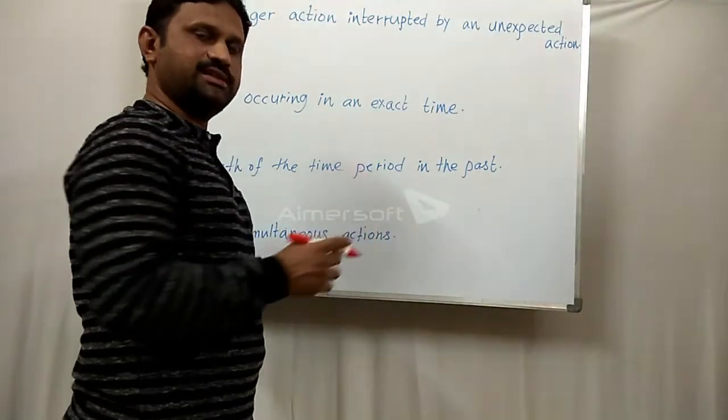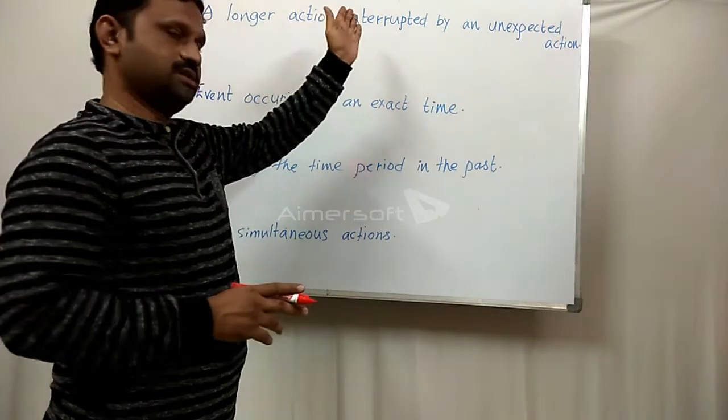Generally, we use past continuous tense negative form to deny actions which were in progress in the past. Past continuous tense negative forms are used in different cases. For instance: a longer action was in progress at the time a short action interrupts it, and also when the exact time of action and situations are carrying on simultaneously.